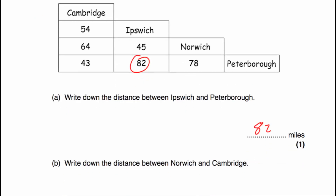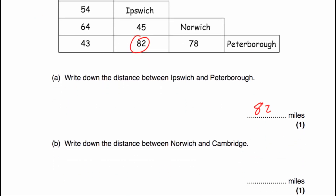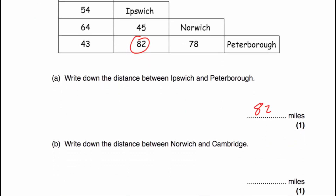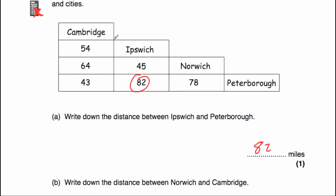Question B says write down the distance between Norwich and Cambridge. If we've got Cambridge and Norwich, we look and see where the column and row meet. If we go down and across, it meets here at 64 miles. So the distance between Cambridge and Norwich is 64 miles.